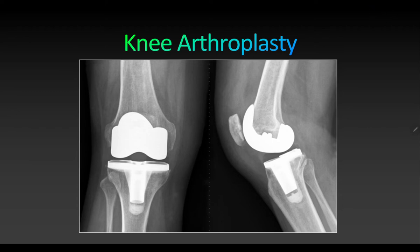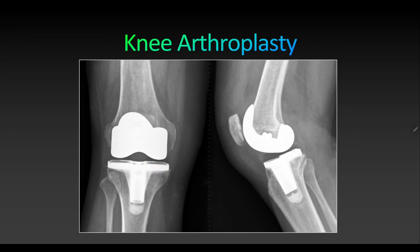Knee arthroplasty is knee joint replacement surgery. The lower end of the femur is replaced by a metallic implant, and the upper end of the tibia is replaced with customized metal plus a polymer or plastic component, both well implanted into the bones. This is one of the treatments for severe, painful osteoarthritis.